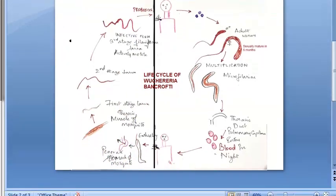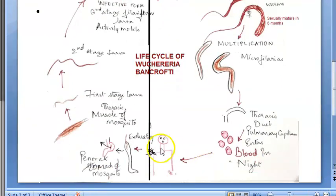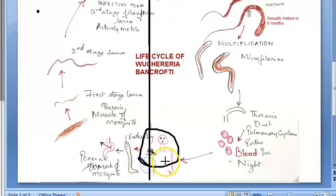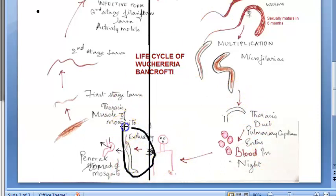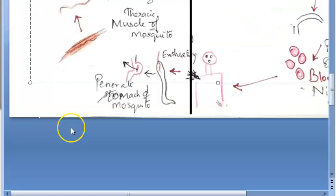The mosquito is biting the infected man and picks up the microfilariae. In the mosquito, the excheathment of this filarial microfilaria happens — it will come out of its sheath in the stomach of the mosquito, then penetrate the stomach wall of the mosquito.